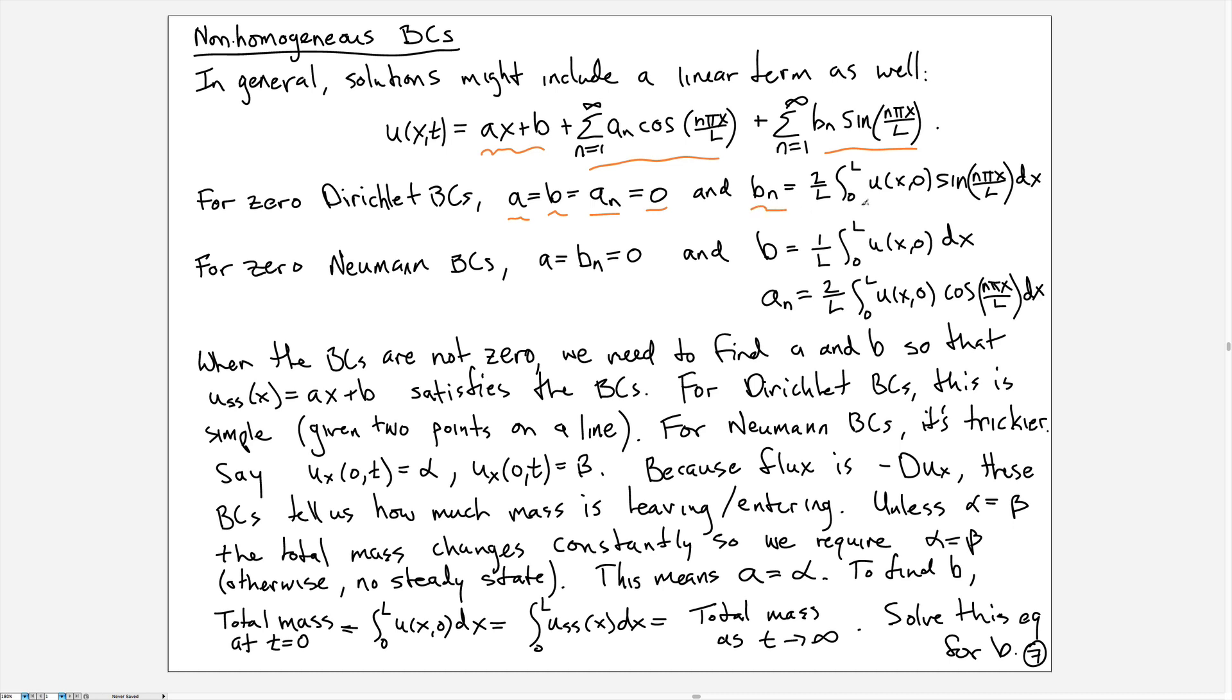For zero Neumann boundary conditions, we choose the a_n to be zero, the b_n to be zero, and we have a formula for the constant term, which I called C earlier, and for a_n, which is the coefficient on the cosine terms.